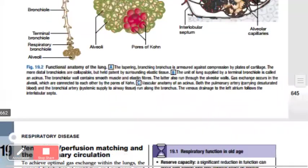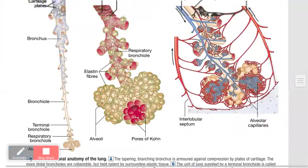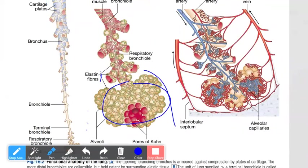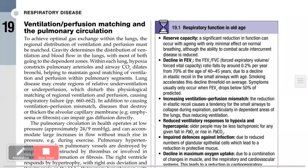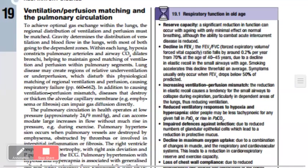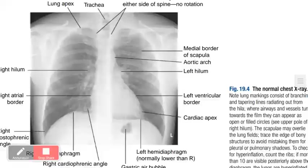These are the alveoli with surrounding capillaries. It is at this level that oxygen and carbon dioxide exchange actually takes place. Now, understanding the normal chest X-ray is important because for most pulmonary pathologies the first investigation of choice is always a chest X-ray.